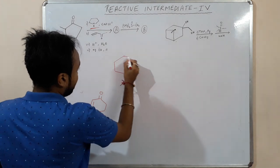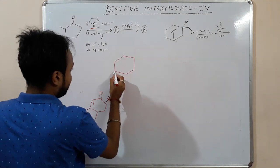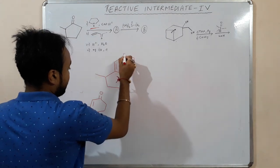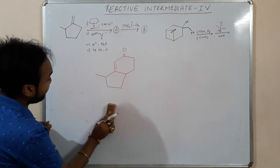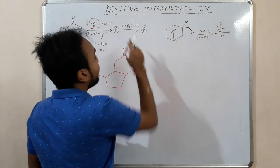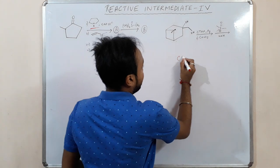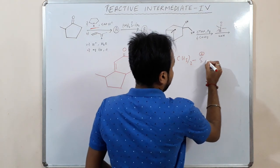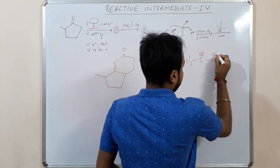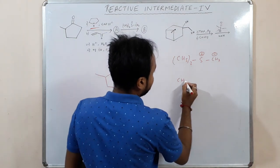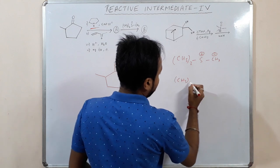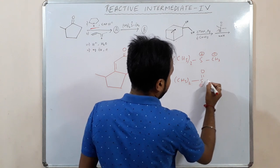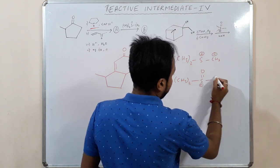Writing again: we have a 6-membered ring and a 5-membered ring. Now, you have given a sulphur ylide. There are two types of sulphur ylides — one is this sulphur ylide and another one is this one.